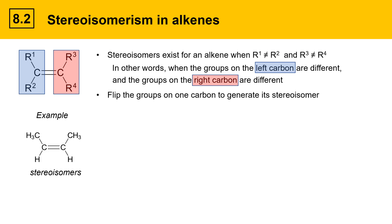To get the stereoisomer of an alkene, all you need to do is flip the groups on any one carbon. In this case I'm flipping the two substituents on the right carbon — hydrogen takes methyl's place and methyl takes hydrogen's place. That generates the stereoisomer shown here, which is the situation where the cis and trans molecules are stereoisomers of each other.